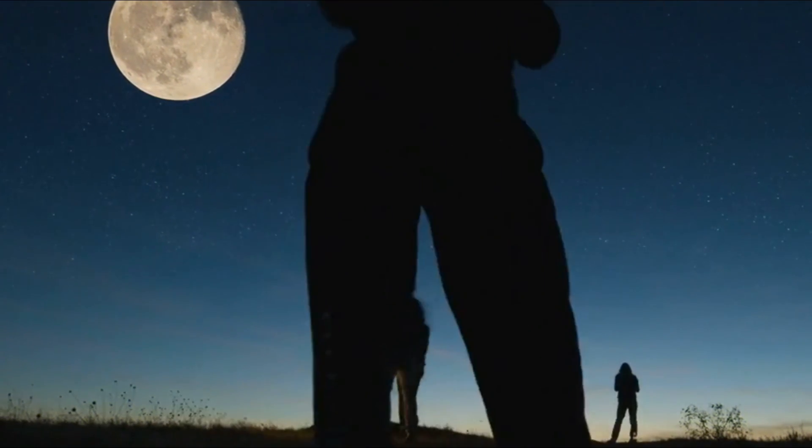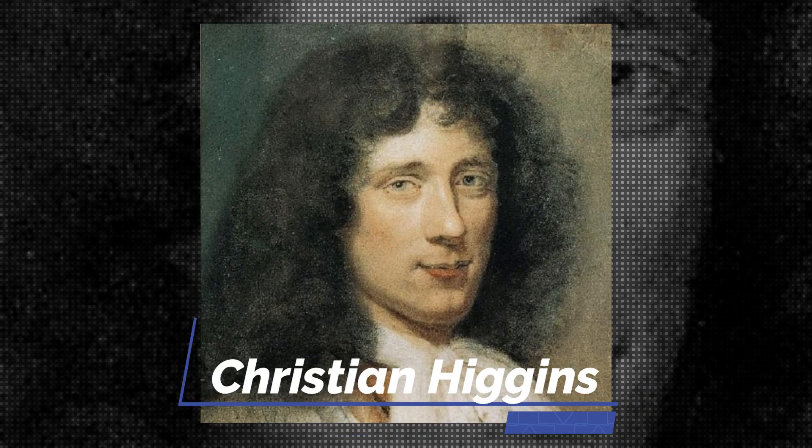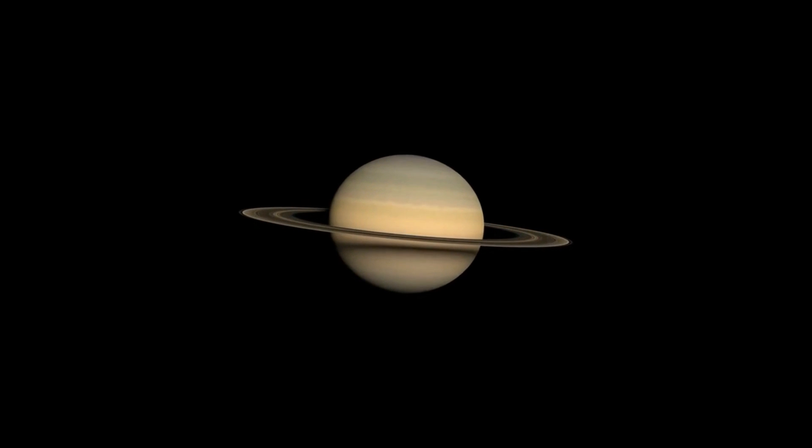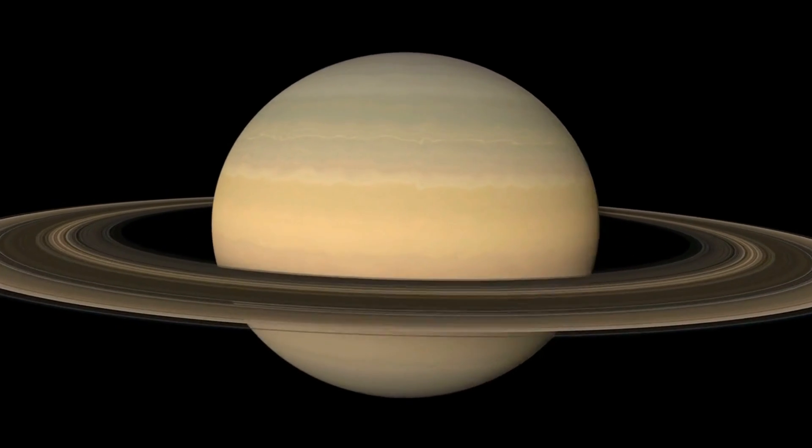Despite its size, any amateur astronomer can study Titan without a professional-grade telescope. Christian Huygens, an astronomer, discovered it in 1655 when he discovered an object moving alongside Saturn. It had previously been observed but was assumed to be a star.